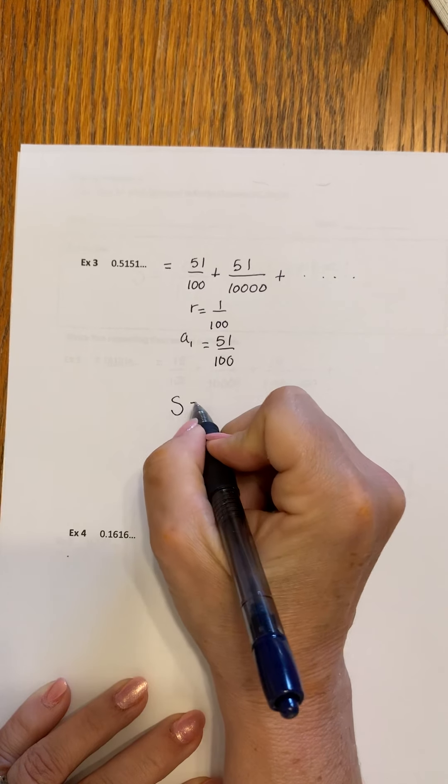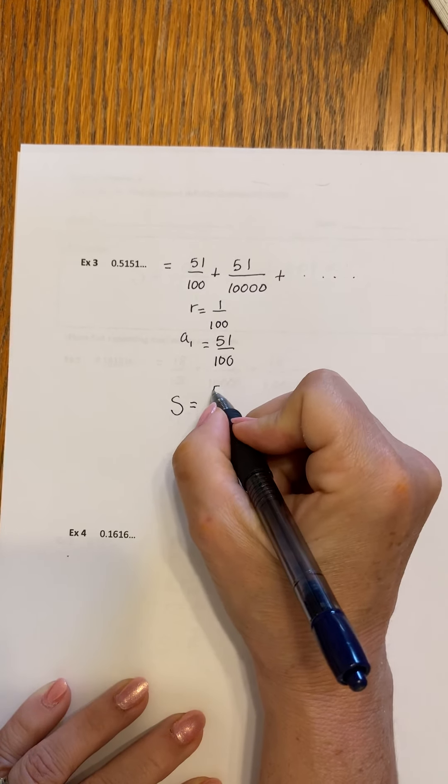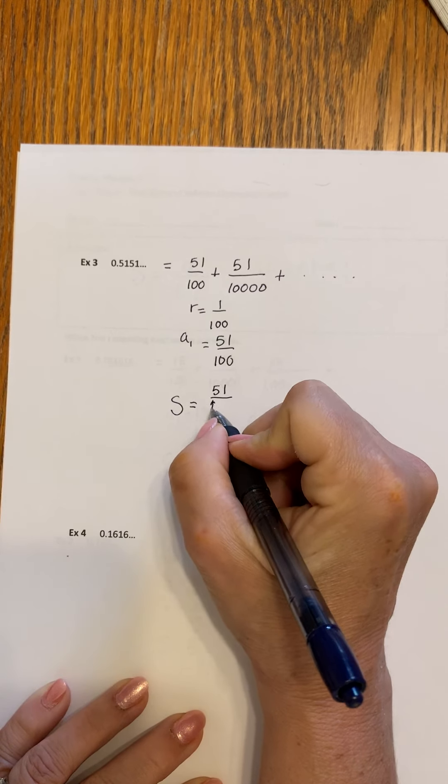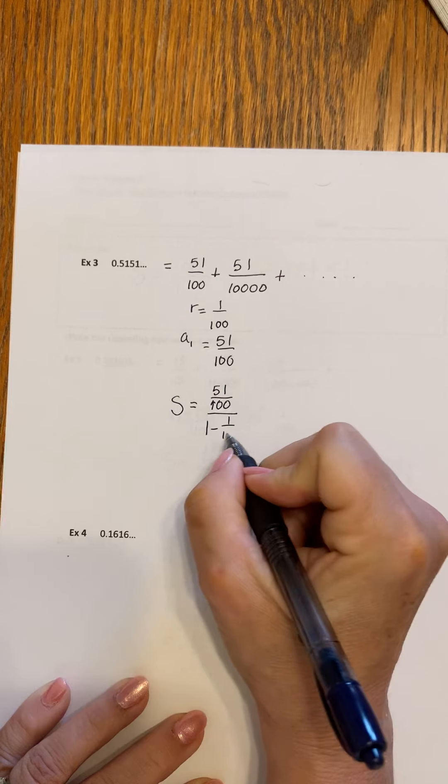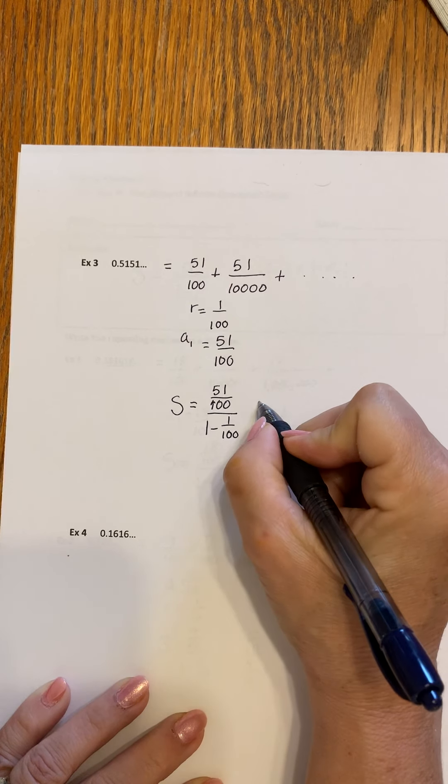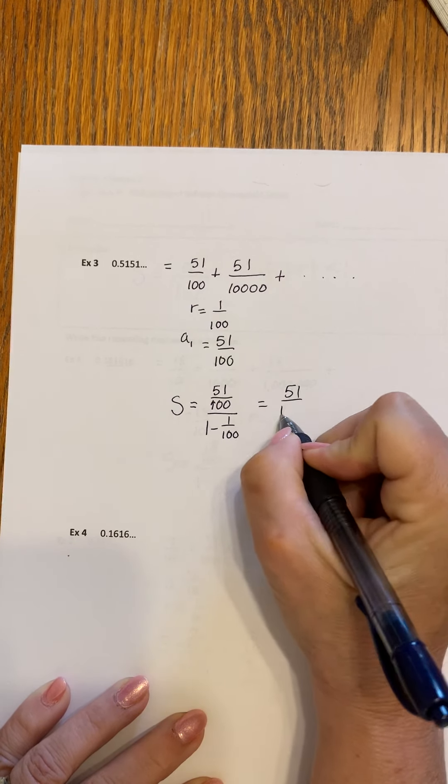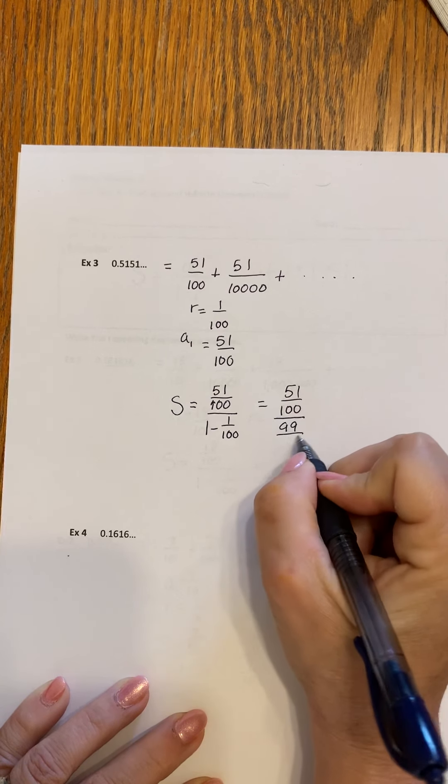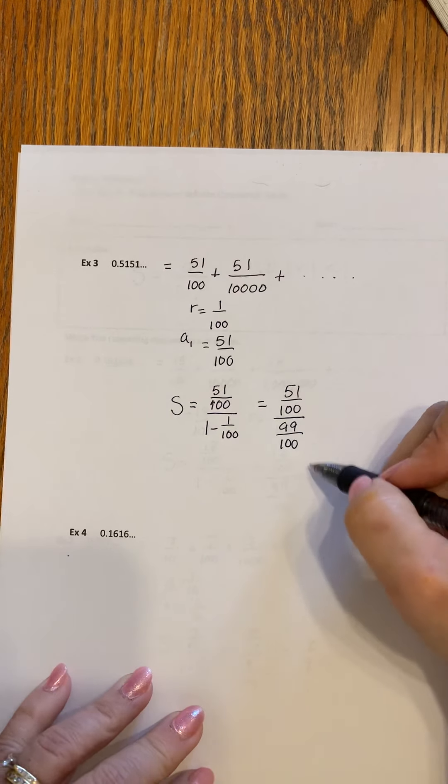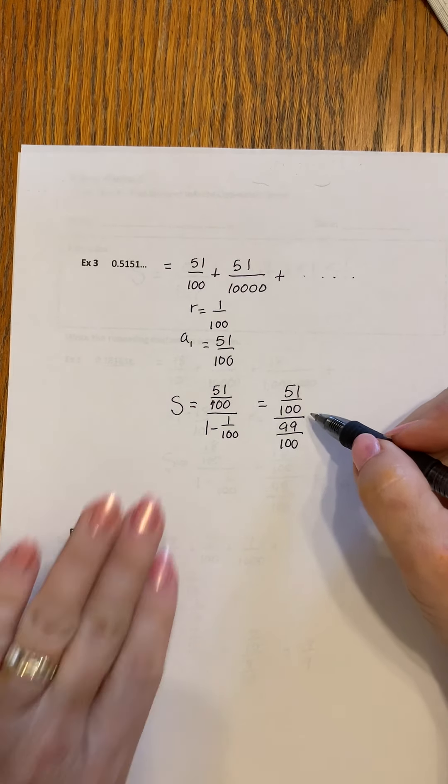When we substitute into that formula, we have 51 over 100 divided by 1 minus 1 over 100. So it's going to be 51 over 100 divided by 99 over 100. Now I didn't say this before, but the hundreds cancel. We have a complex fraction.